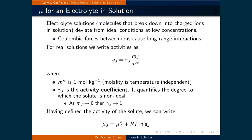Electrolyte solutions — meaning solutions composed of molecules that break down into charged ions when in solution — deviate from ideal conditions at low concentrations. This is because of the coulombic forces between ions that act over a long range. Therefore, we have to treat ionic systems as real solutions.